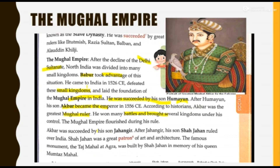After Akbar, his successors followed. His son Shah Jahan is very famous — he had a great passion for art and architecture. The most famous monument he built was the Taj Mahal in Agra.